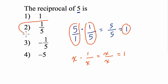So the answer is choice 2 because 1 fifth times 5 is 1. Therefore, 1 fifth is the reciprocal of 5. Thank you.